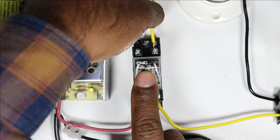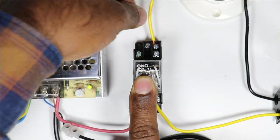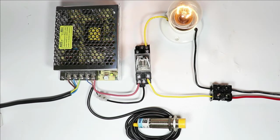For now, if I use NC contact, then what happens is if no object is present, then lamp will remain on, but when an object comes close to sensor, then lamp will turn off.